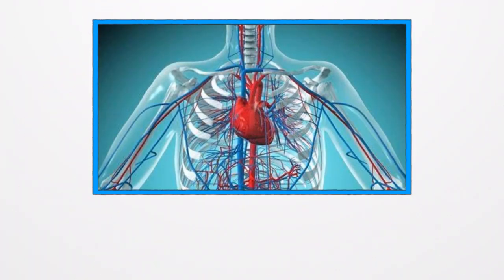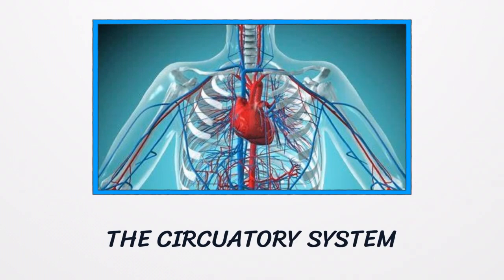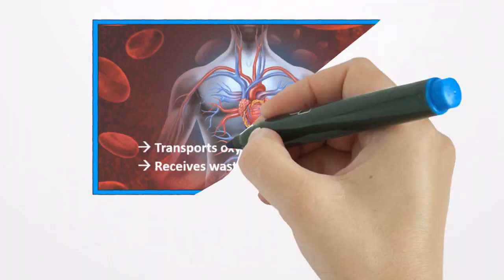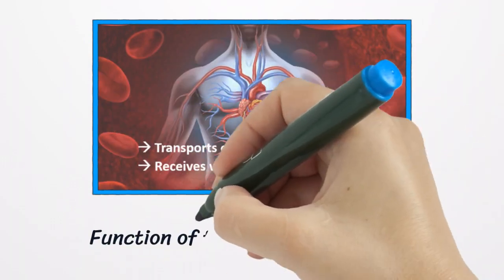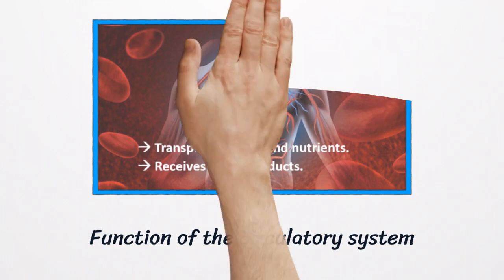Hello everyone, this is Naghem and today we are talking about the circulatory system. The function of the circulatory system is to transport oxygen and nutrients all around the body and to receive waste products as well.